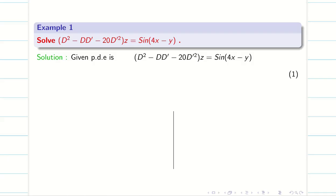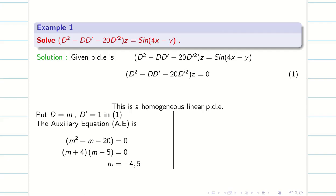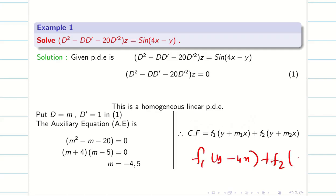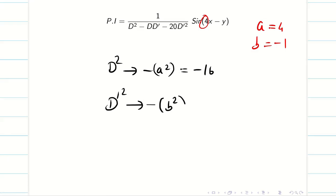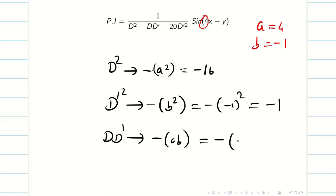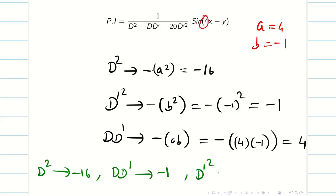For the next problem, since it is a homogeneous linear PDE with constant coefficients, we set RHS = 0 to find the complementary function. The roots are m = -4 and m = 5, so CF = f₁(y - 4x) + f₂(y + 5x). Next we find the PI. Here a = 4 (coefficient of x) and b = -1. So D² = -16, D'² = -(-1)² = -1, and DD' = -a·b = -(4)(-1) = +4.